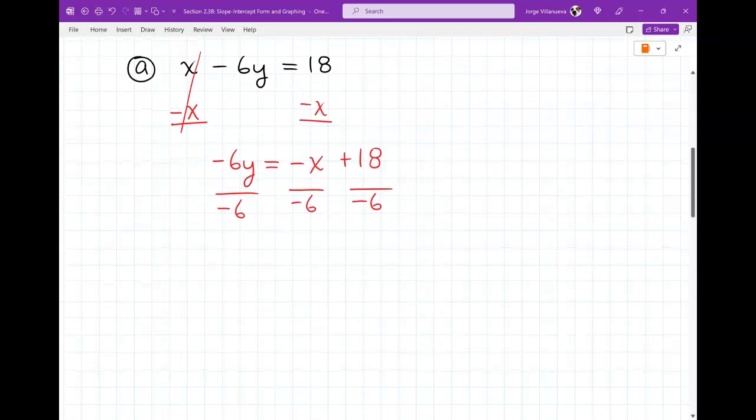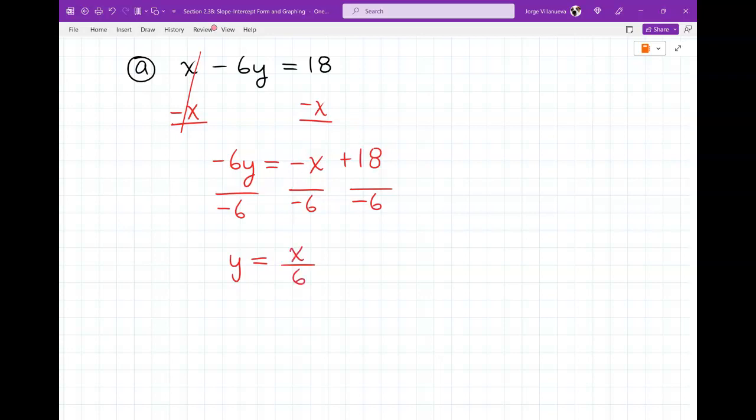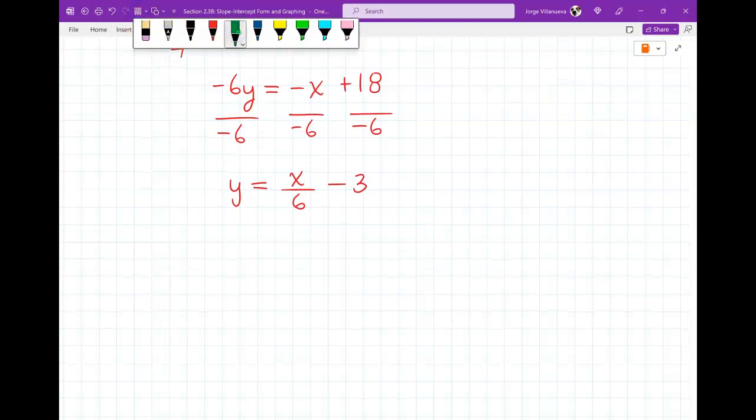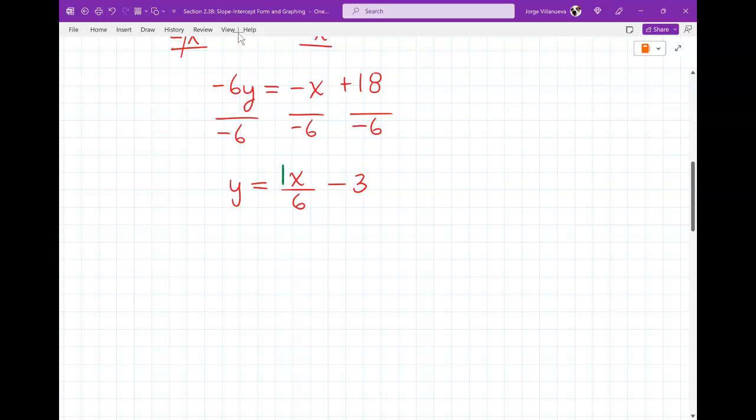So on the left side, it's just going to be y. Now, negative x divided by negative 6 becomes positive, x over 6. 18 divided by negative 6 is negative 3. Now, this is a good answer. There's nothing wrong with this answer, but it doesn't necessarily look like y equals mx plus b. There's no whole number or fraction in front of the x, but it is there. So what number is next to the x right now? A 1. So if I want to write it y equals mx plus b, this is what I'm going to do. y equals 1 sixth x minus 3.